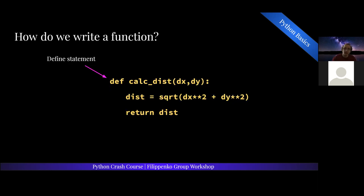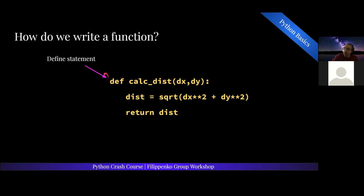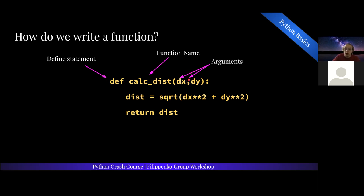The way we take advantage of that is with functions. How do you write a function? It always starts with a definition statement, denoted as DEF. Then every function has its name — calc_dist is the name of this function. And then every function also has its arguments. There can be one argument, there can be multiple arguments. You can specify that it needs to be an integer or a list, but Python is smart so you don't always have to. These arguments can be lists, integers, floats, or strings — it depends on how you're writing your function.